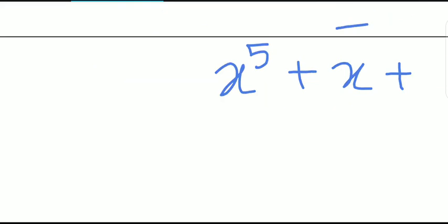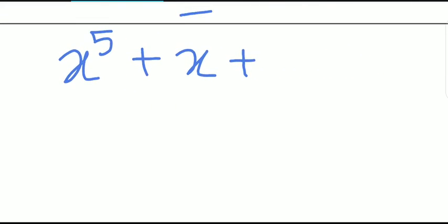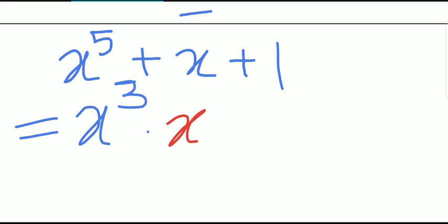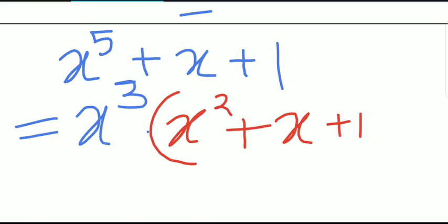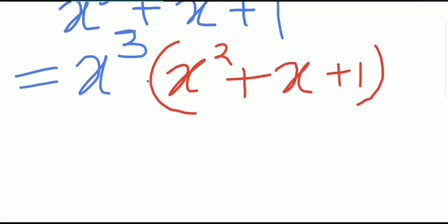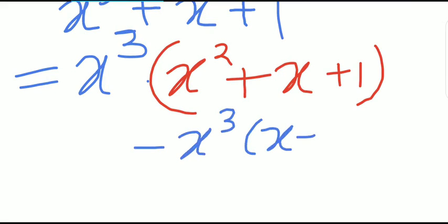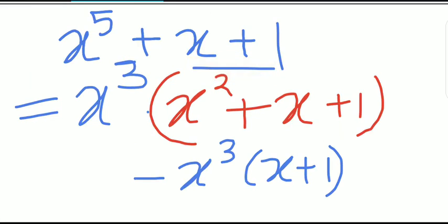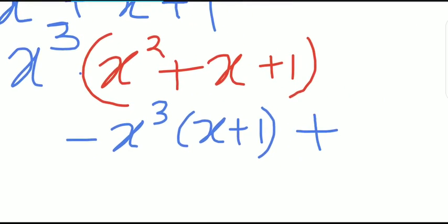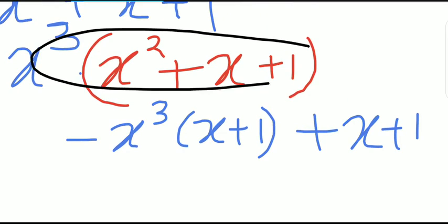Now, x to the power 5 plus x plus 1, where x squared plus x plus 1 is a factor. We can write x to the power 5 as x cubed into x squared. Since x squared plus x plus 1 is a factor, I add x plus 1 and then subtract x plus 1 to maintain equality, giving minus x cubed into x plus 1. The expression x plus 1 is copied as is. We get a factor x squared plus x plus 1 from the first part.